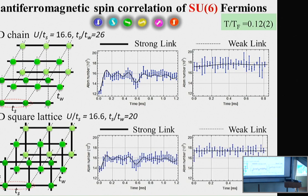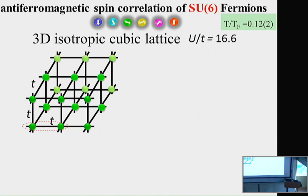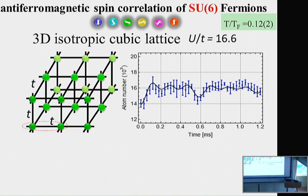We also performed this measurement for the 2D square lattice, again observing STO signal for strong links within the 2D square lattice and almost no STO signal for weak links between the 2D layers. We also applied this method to a 3D isotropic cubic lattice and again clearly observed the STO signal.